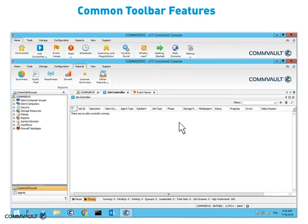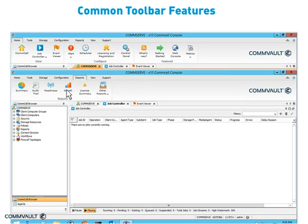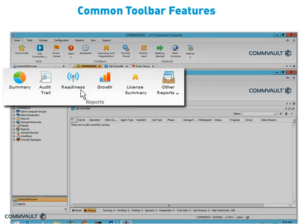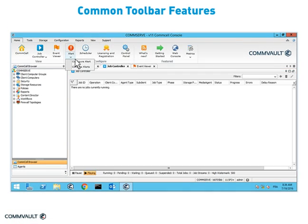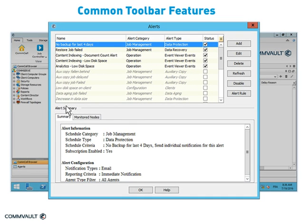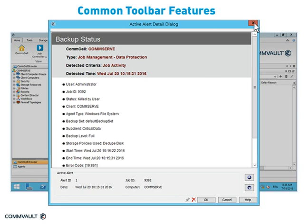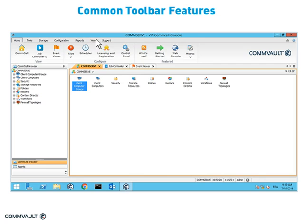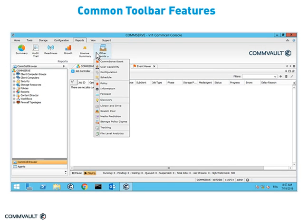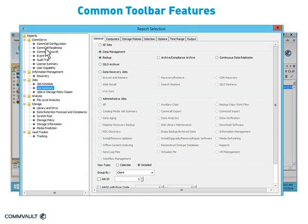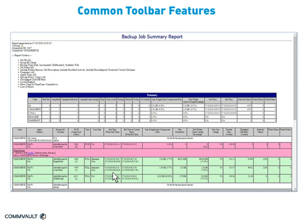Common toolbar features include alerts and reports that are simple to set up and use. Alerts are configured to provide real-time feedback on conditions in the CommCell environment. Commvault software also provides a number of predefined reports to choose from, and all of these reports can be fully customized. For instance, here's a daily summary of all backup jobs.